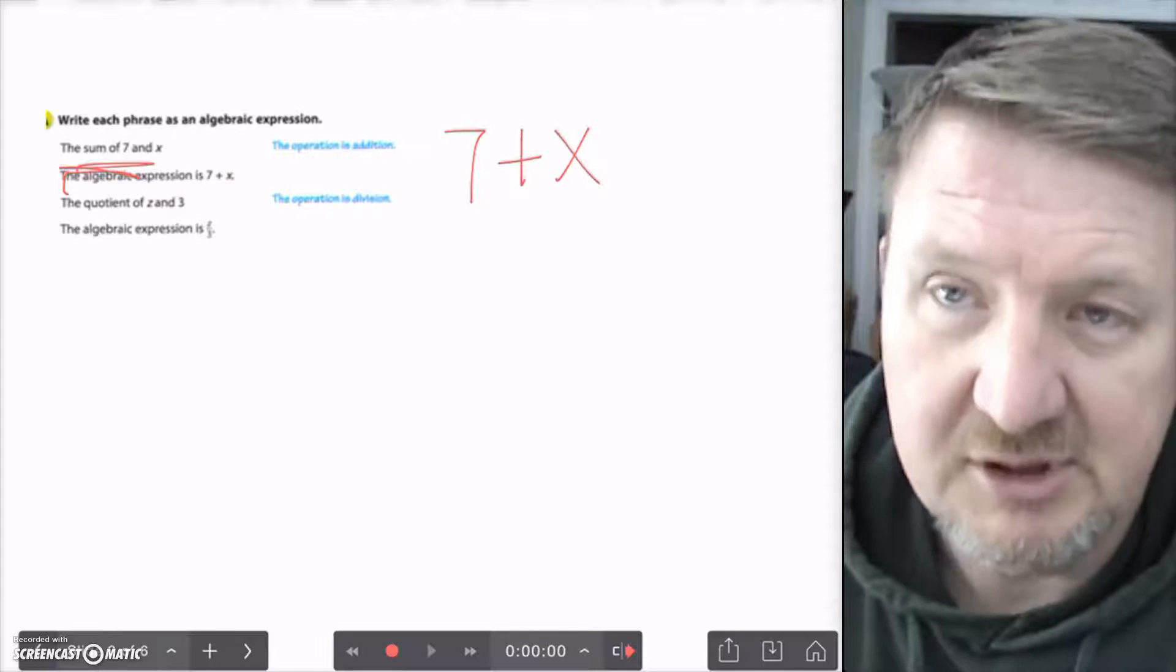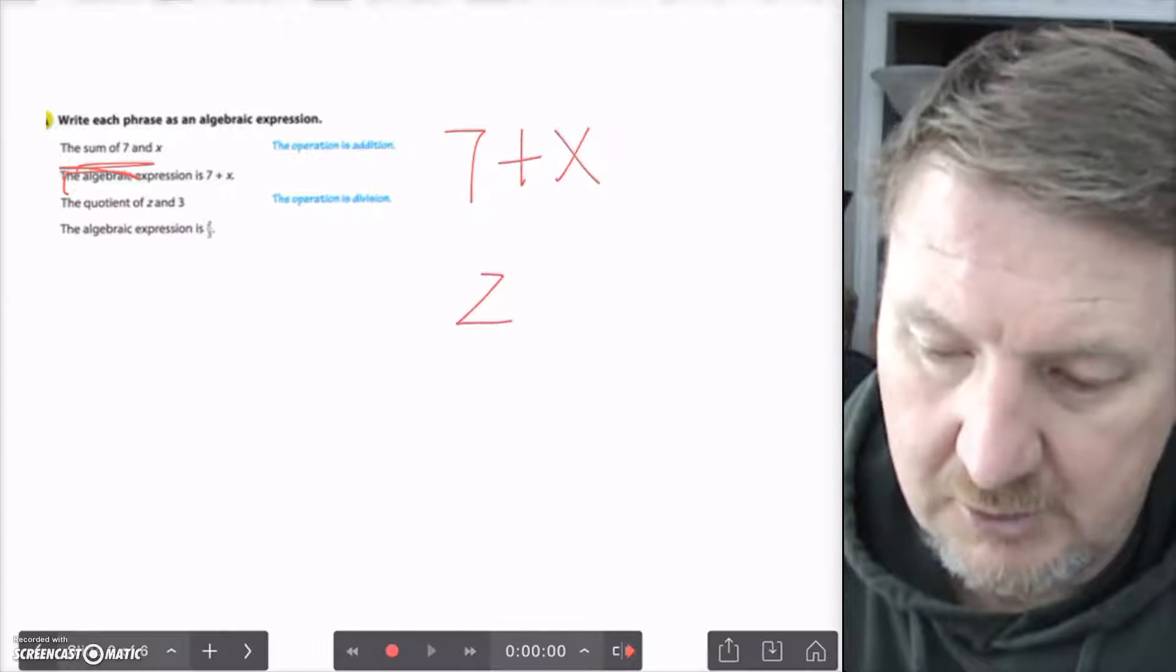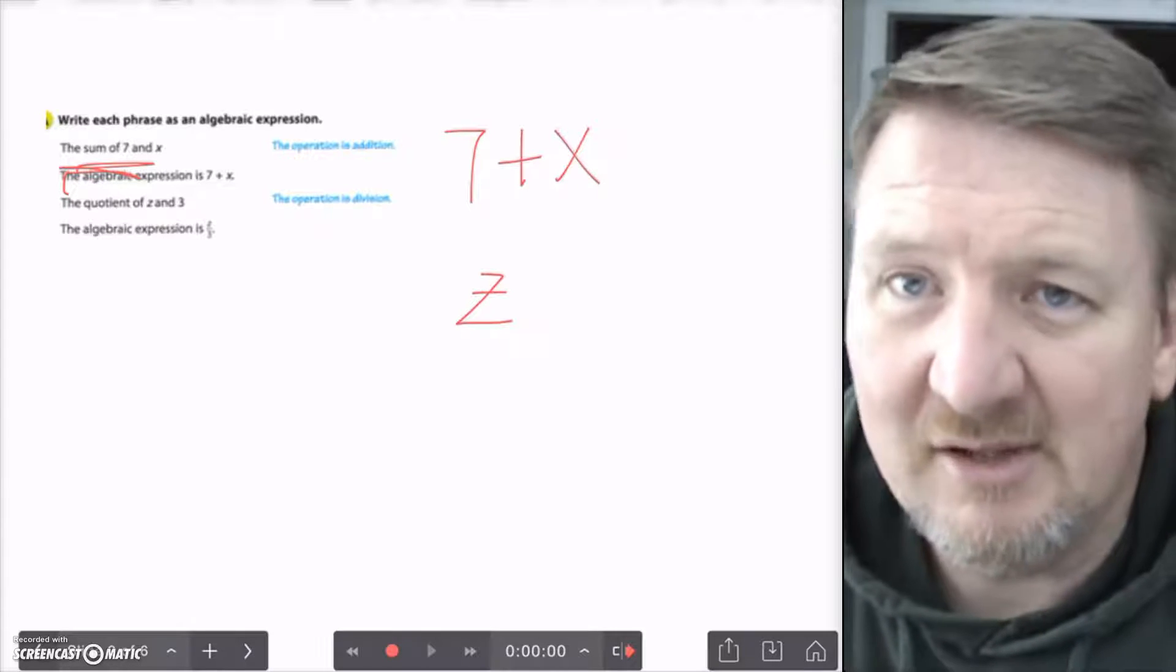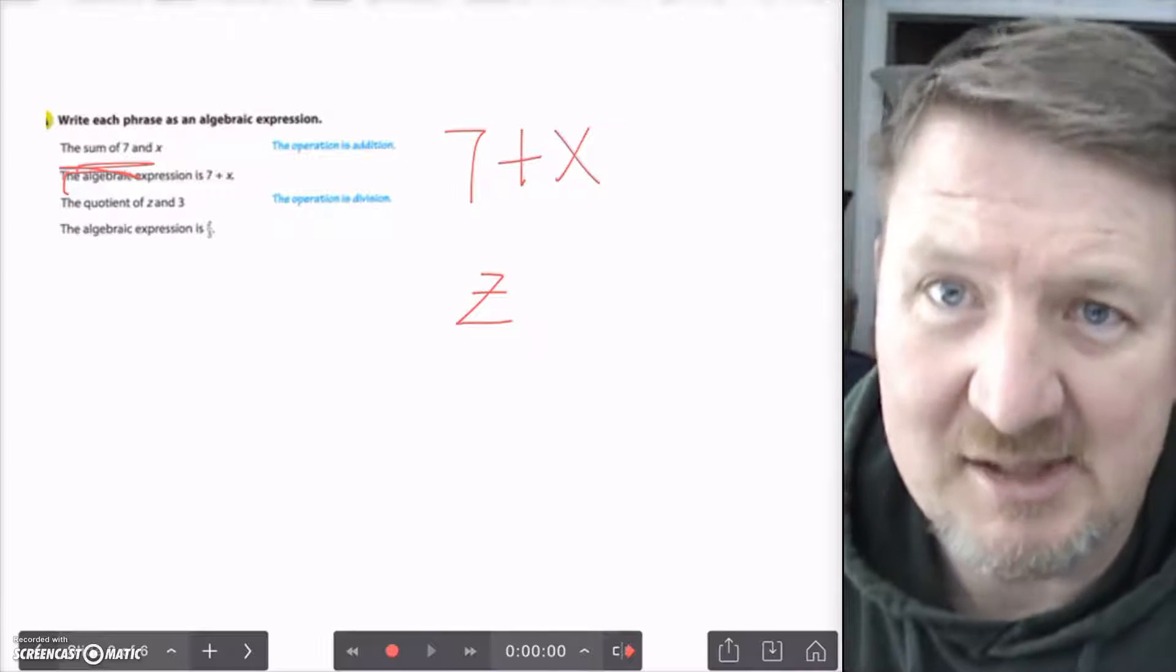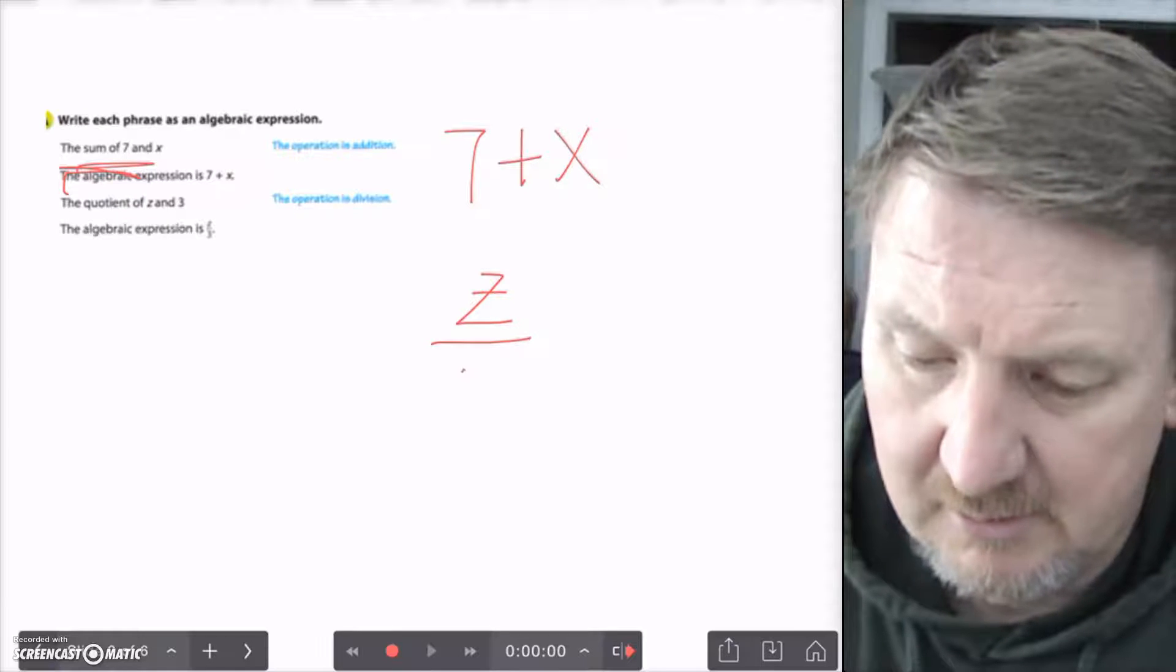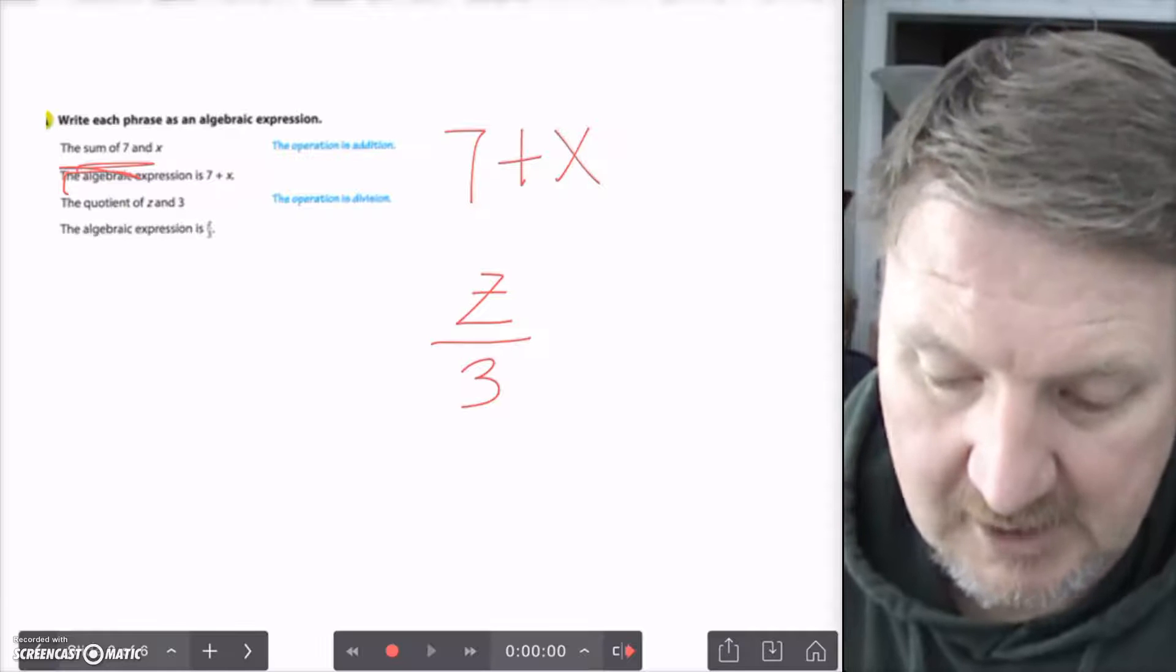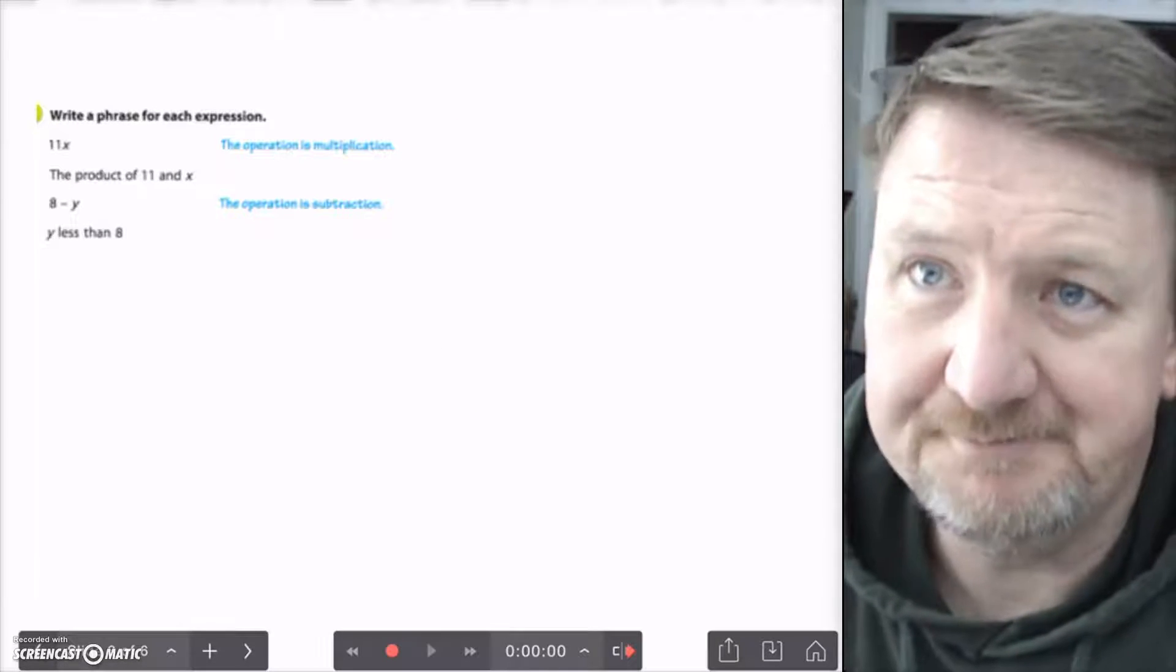Then you have the quotient of z and 3. So, you have the variable z. Now, I always put - because my letters and numbers look too close to each other - I always put a line on my z so I could identify a z from a 2. But z over 3, which means z divided by 3. So, you have to know what those words mean. That helps you out tremendously.